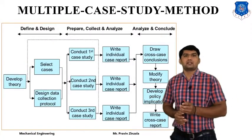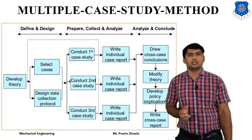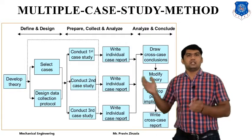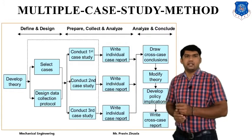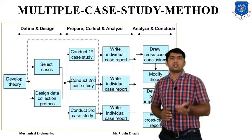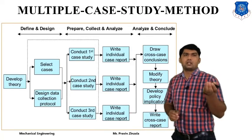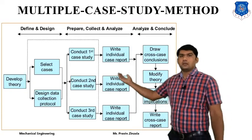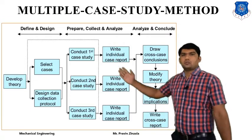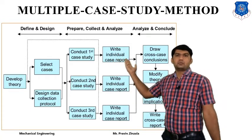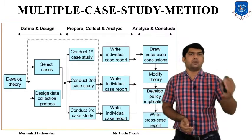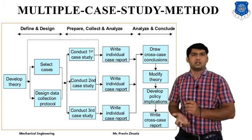Here is one example of multi-case study methods. If there are three, four, or more than two problems or components that you want to study, you follow the steps for the multi-case study method. First, develop the theory — which type of component or case study you require: individual, community, industrial, or organization. Then select the case study. The multi-case study is divided into three parts: first is definition and design; second is prepare, collect, and analysis; and third is analysis and conclusion. After the end of the case study, you come to one conclusion for the particular component.